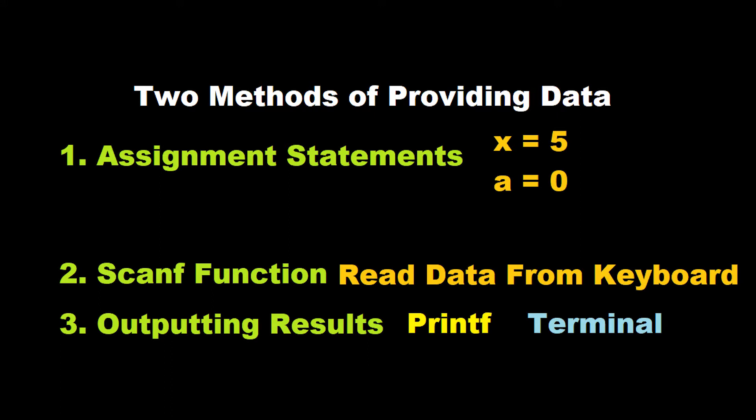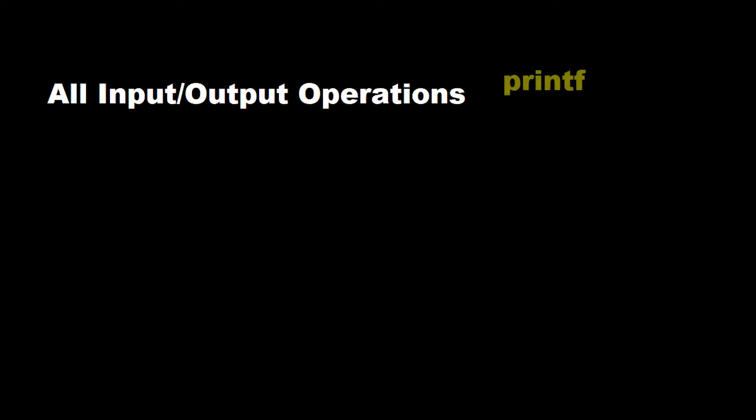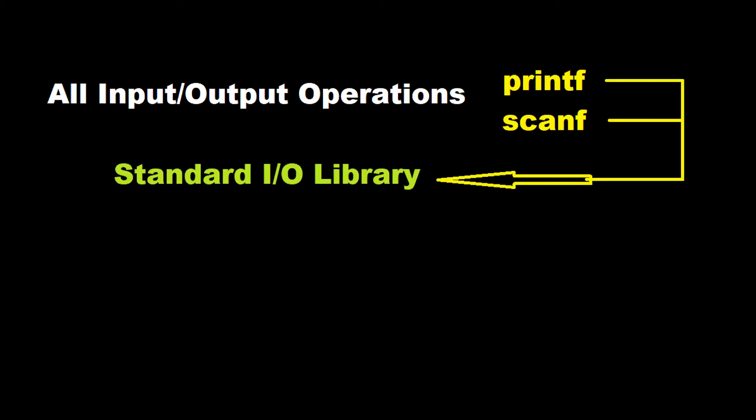Unlike other high-level languages, C does not have any built-in input-output statements as part of its syntax. All input-output operations are carried out through function calls such as printf and scanf. There exist several functions that have more or less become standard for input and output operations in C. These functions are collectively known as the standard input-output library.